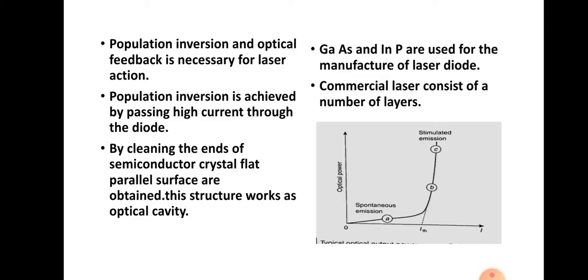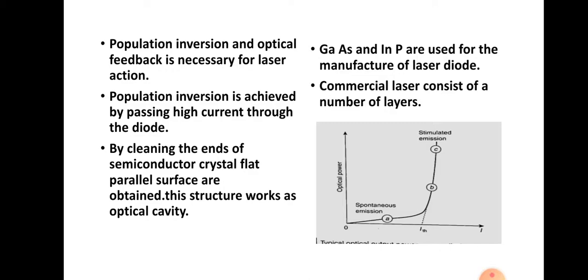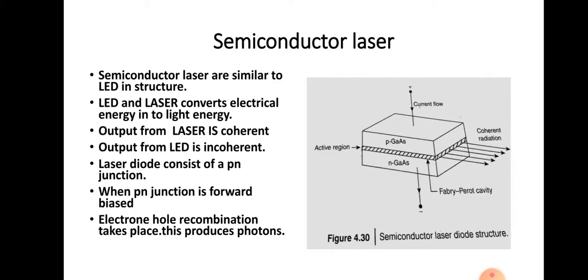This is the operation of the LED structure, and a similar operation takes place in the laser structure. But for lasing action to occur, there will be population inversion and stimulated emission. Population inversion and optical feedback are necessary for laser action. Population inversion is achieved by passing a high current through the diode. When we are passing a high current to this structure, population inversion will take place — more carriers will go to the higher energy state so that the number of carriers in the higher energy state will be higher compared to the lower energy state, so that stimulated emission will occur, producing coherent radiation of light.